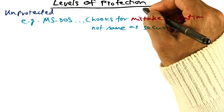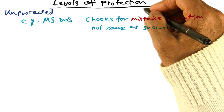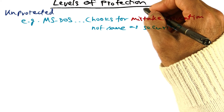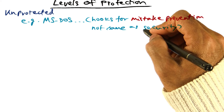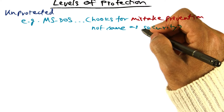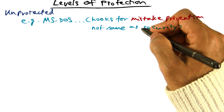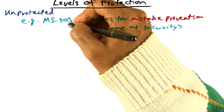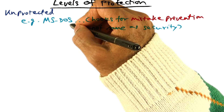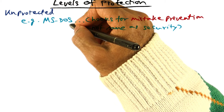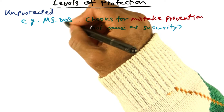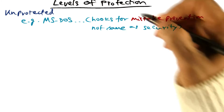This also goes on to identify four levels of protection. The first is an unprotected system, where there is no level of protection at all. An example would be the early operating system for the personal computer called MS-DOS.